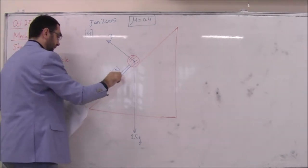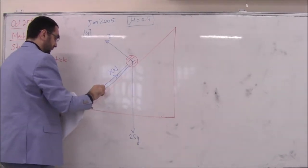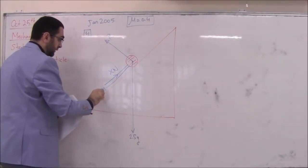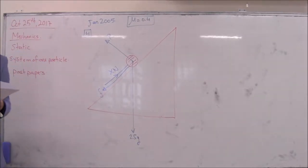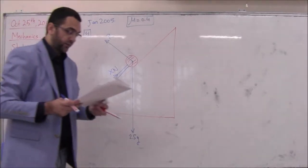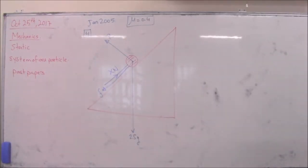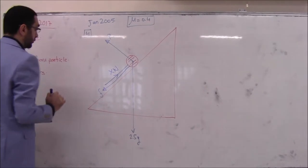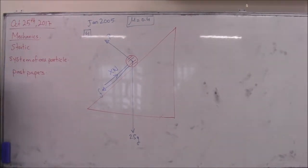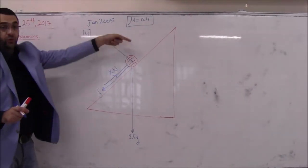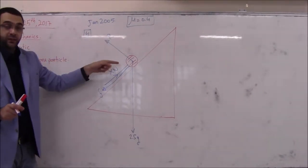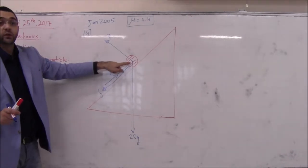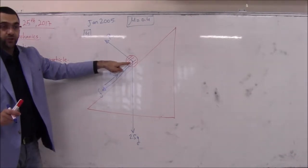Since it's on the point of moving up, the friction will be directed downward. First we calculate the normal force, then we show the particle is in equilibrium. Note this force has its tail outside the object, so we need to shift it.